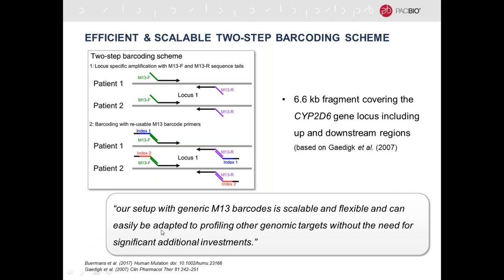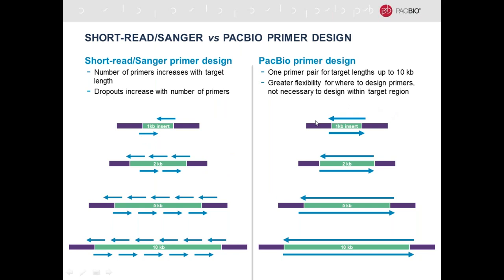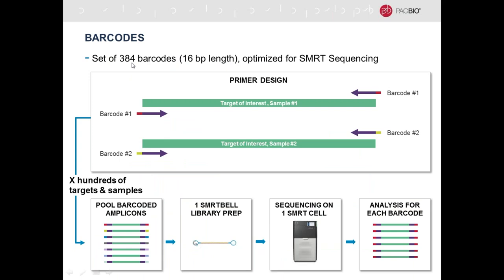This scheme is very flexible because to move from one locus to another CYP gene, all you need is two primer pairs with universal adapters—the second-step PCR stays the same. In general, PacBio targeted amplicon sequencing is inherently much simpler than short-read or Sanger sequencing because for inserts longer than about 1 kb, all you need is two primer pairs, a long-range PCR, and the amplicon is sequenced full length. We have 384 barcodes optimized for SMRT sequencing, allowing pooling and simultaneous sequencing of hundreds of targets and samples.